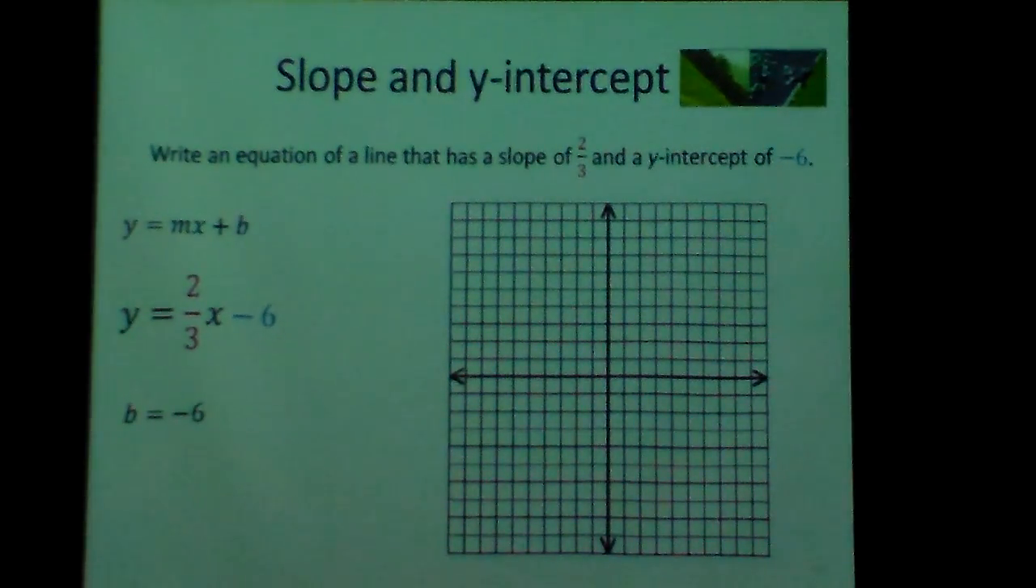Now, how would I graph that? Well, the y-intercept is at the point (0, -6). So I'm going to put a dot right there.